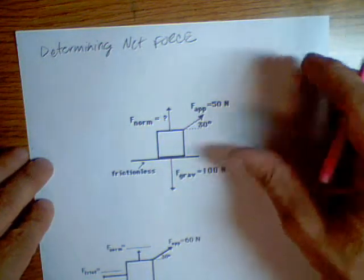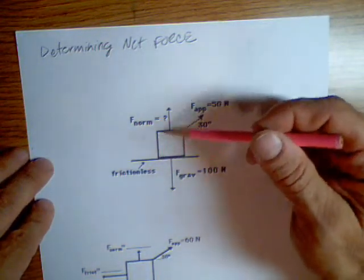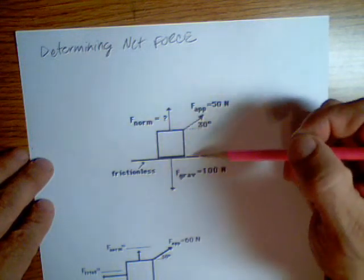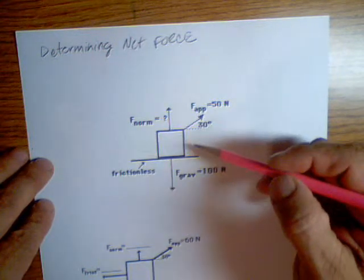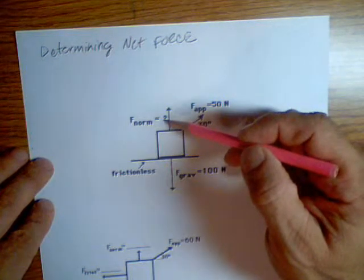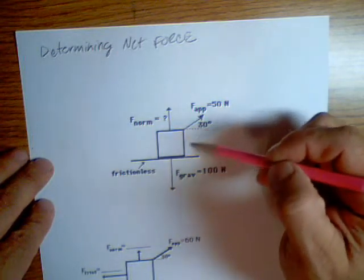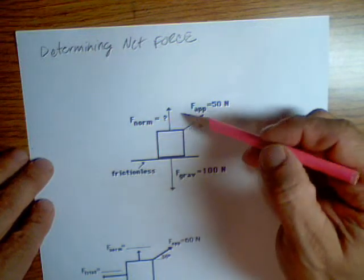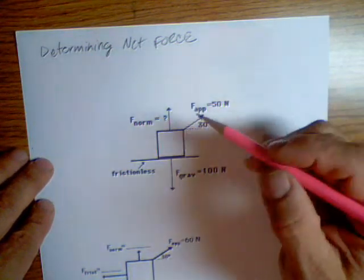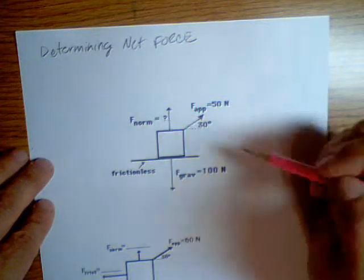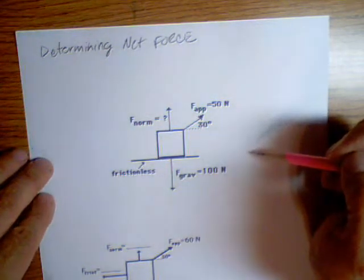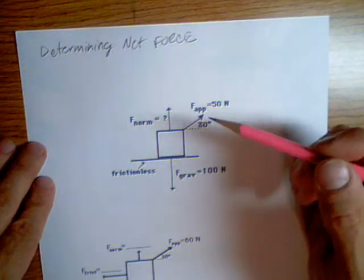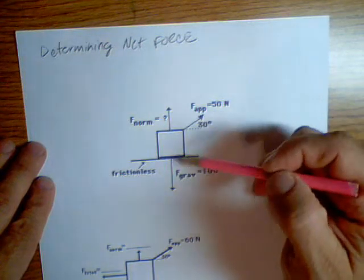For this first problem, we just have a block sitting on a frictionless surface. That doesn't affect us much. We're just interested in what the normal force is. A frictionless surface would matter if we're moving in the x direction, but really we're just interested in what's going on in the y direction to find the normal force, because normal force is the one we don't have. Finding normal force should be fairly simple because the block is not moving.